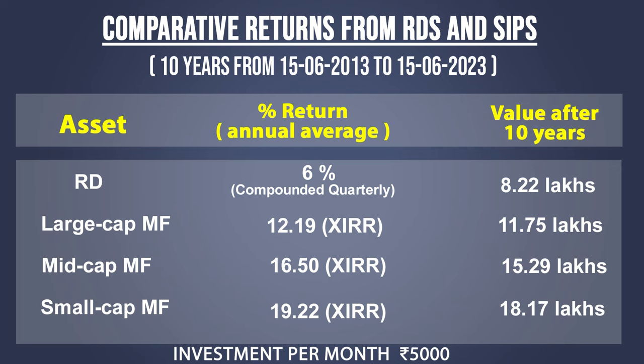In this table, we have taken the returns from RDs and SIPs for a 10-year period from 15-6-2013 to 15-6-2023. The average return from RD is 6%. It is important to understand that in RDs, the interest rates are compounded quarterly. For mutual funds, I have taken a large-cap mutual fund, mid-cap mutual fund, and small-cap mutual fund. The average returns for this 10-year period are 12.19% for large-cap funds, 16.5% for mid-cap funds, and an incredible 19.22% for small-cap mutual funds.